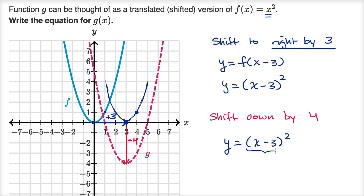So whatever y value we were getting, we want to now get four less than that. So the shifting in the vertical direction is a little bit more intuitive. If we shift down, we subtract that amount. If we shift up, we add that amount.